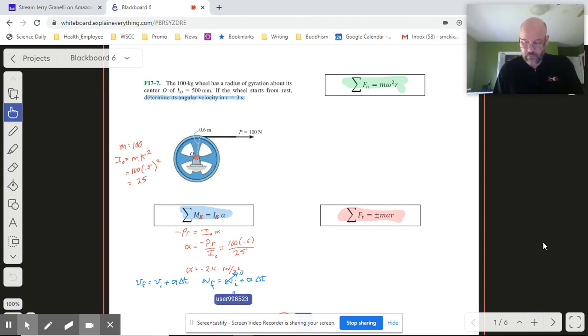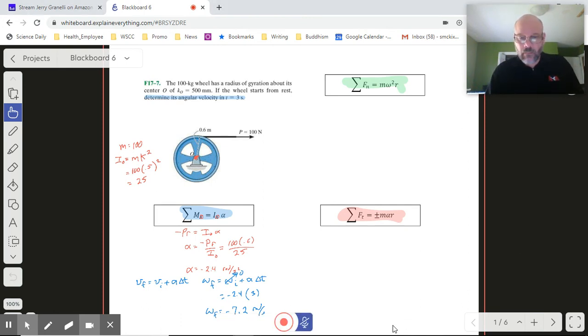We're left with minus 2.4 times our time interval which is three, so our final angular velocity becomes negative 7.2 radians per second.